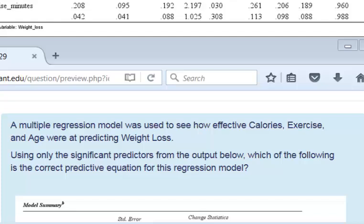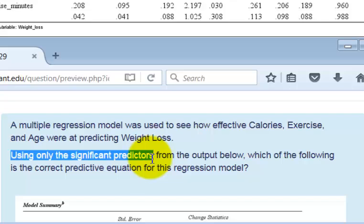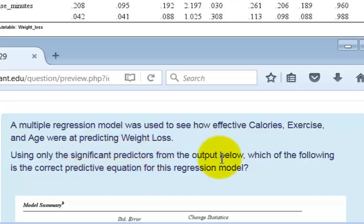This question gets missed a lot because of one reason. You guys kind of overlooked this one part. I'll give you a big hint. Use only the significant predictors. Significant predictors from the output. That means you look at their beta weights.